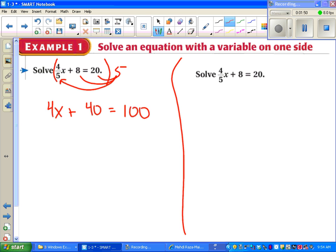Solving from here. We're just going to use those four properties we just saw. We can subtract forty from both sides. And then divide both sides by four. Or you could say multiply by one-fourth. We get fifteen.